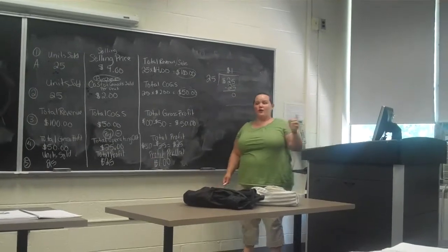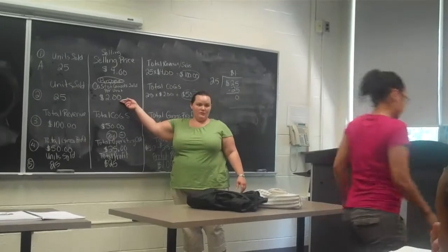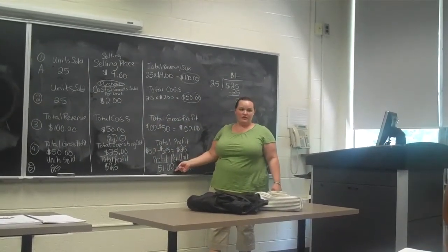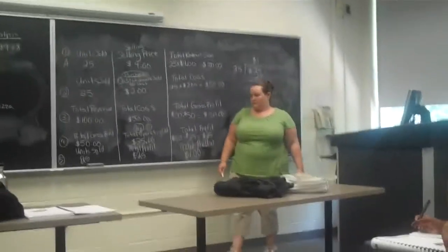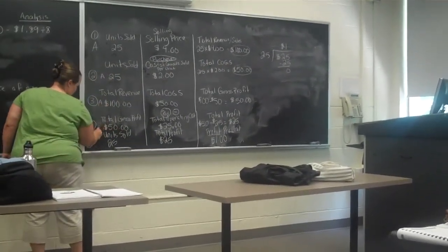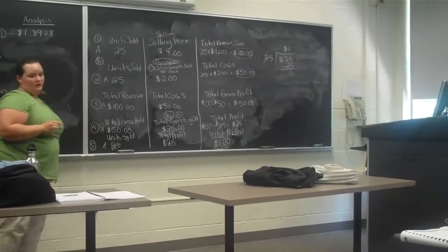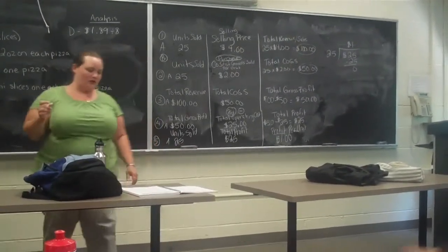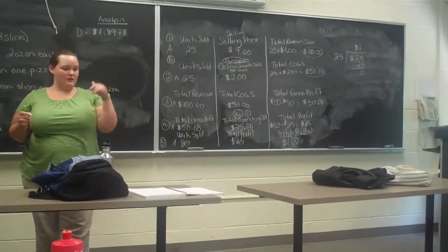It costs you $2 to purchase each item, and the profit you make off of them is only $1 each, after you subtract all the things you need to subtract. This is all Company A. Now Company B — this is work for you guys, because Company B doesn't have anything filled in except how many things they sold and how much they sold it for. Back to page 43.